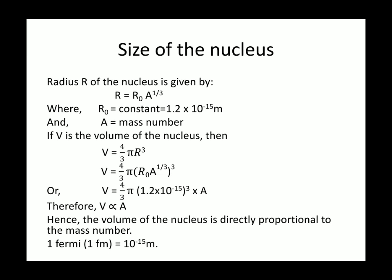But it is a usual practice to express the nuclear radius in a unit called Fermi after the famous physicist Enrico Fermi, where 1 Fermi is equal to 10 to the power minus 15 meters.